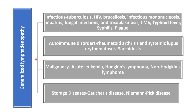In generalized lymphadenopathy, we should think of infections, autoimmune disorder, malignancy, or storage disorder. Infections leading to generalized lymphadenopathy include tuberculosis, HIV, brucellosis, infectious mononucleosis — which can cause localized or generalized — hepatitis, some fungal infections, toxoplasmosis, CMV, typhoid fever, syphilis, and plague.